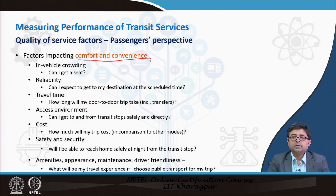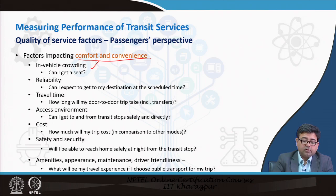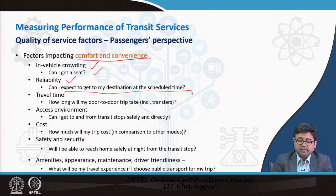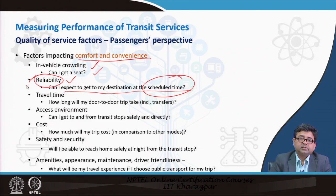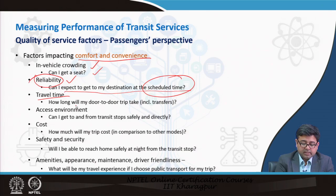Moving to factors that impact comfort and convenience — these are very intuitive factors many of us think about every time we plan to take public transportation. First is in-vehicle crowding: we are always worried about getting a seat. Second is reliability: can I expect to reach my destination at the scheduled time, or should I give myself a buffer? We always calculate that buffer in our head — if the bus is not reliably on time, I still have some extra time available to reach my destination.